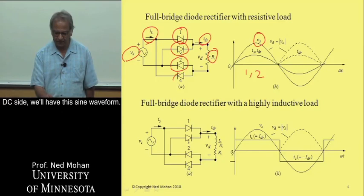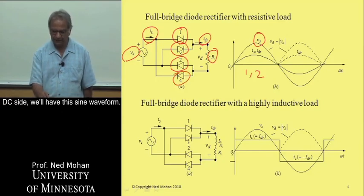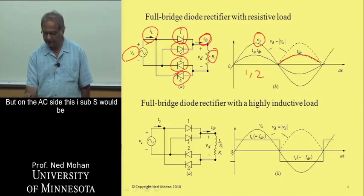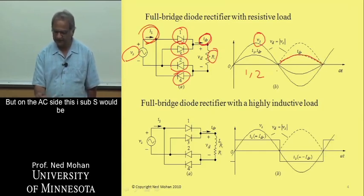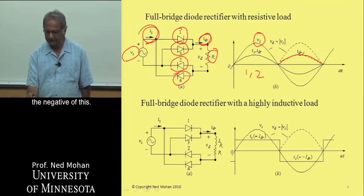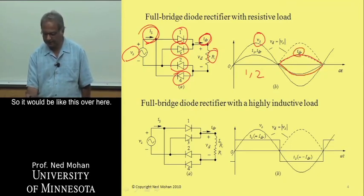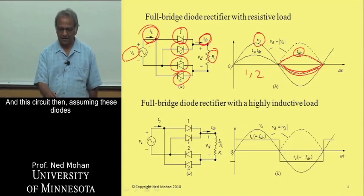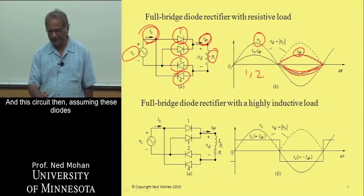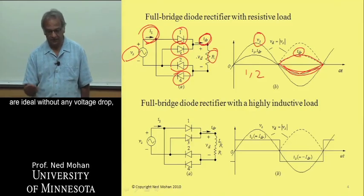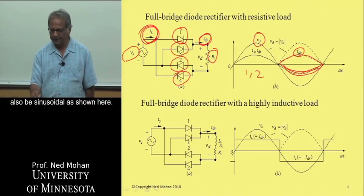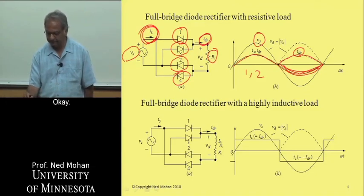On the DC side, we'll have this current waveform. But on the AC side, this IS would be the negative of this. So sinusoidal voltage is coming in. And this circuit then, assuming these diodes to be ideal without any voltage drop, this current drawn, this IS would also be sinusoidal as shown here.